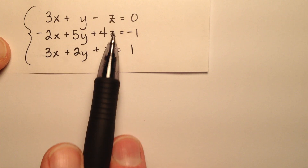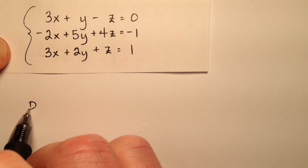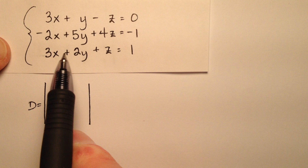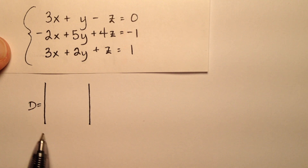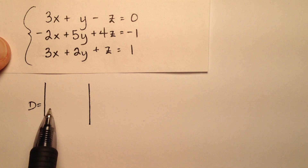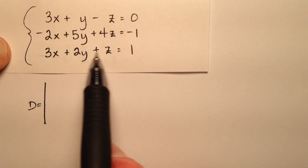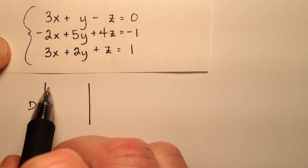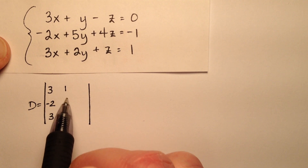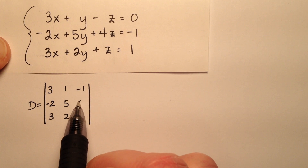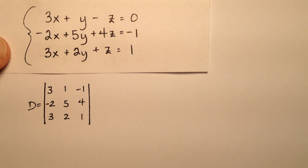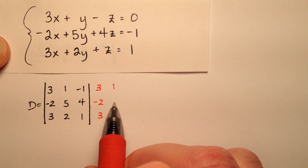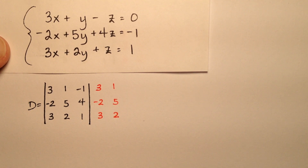The next thing I want to do is write my coefficient matrix and find its determinant. I'm going to call that determinant D, and this determinant will keep coming back over and over again because each of my solutions for x, y, and z will be fractions with this determinant as the denominator. My coefficient matrix is going to be 3 by 3, with x coefficients in the first column, y in the second, and z in the third. I'm going to copy down the first two columns to the right of my determinant and use the diagonal process.